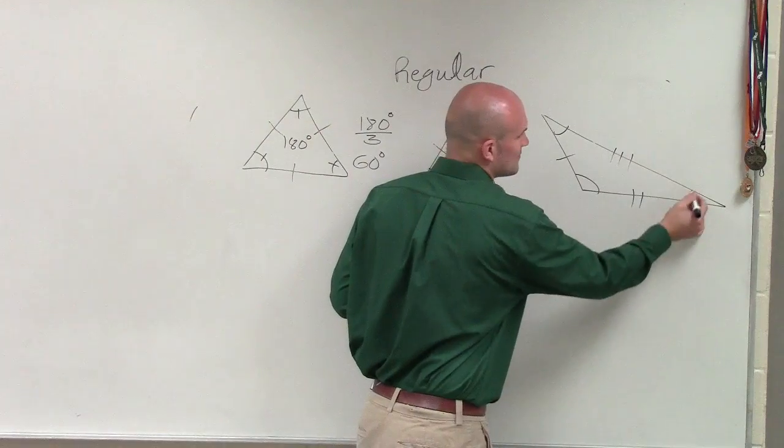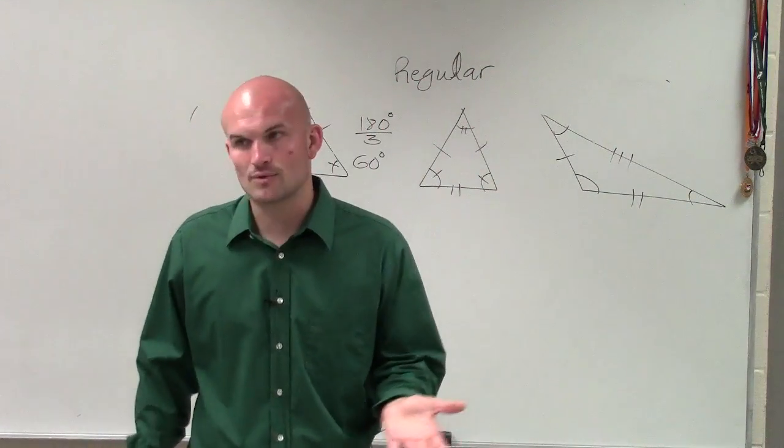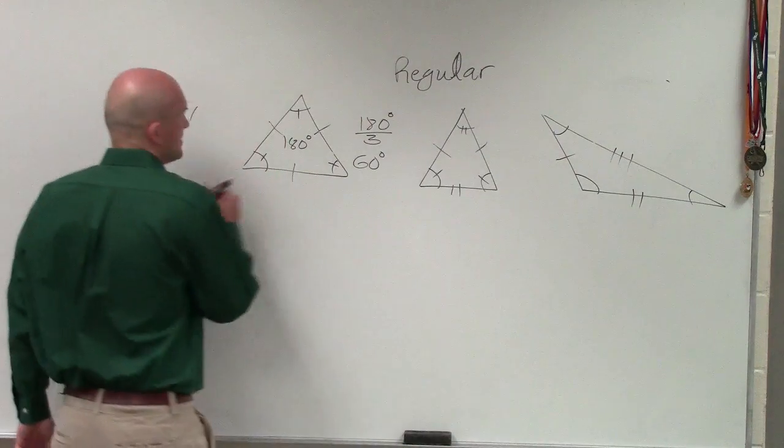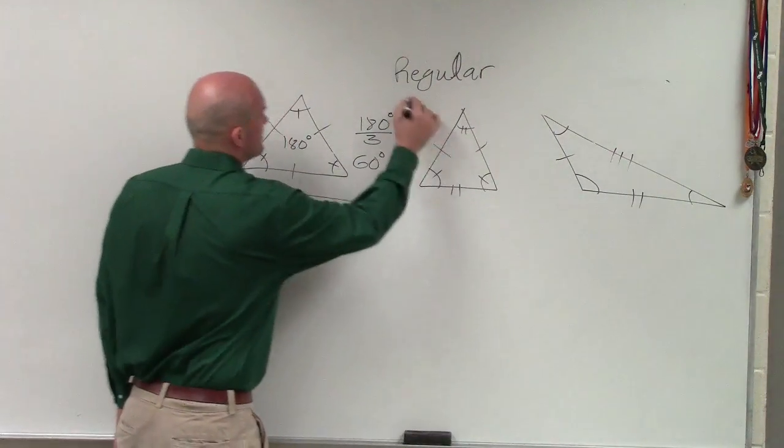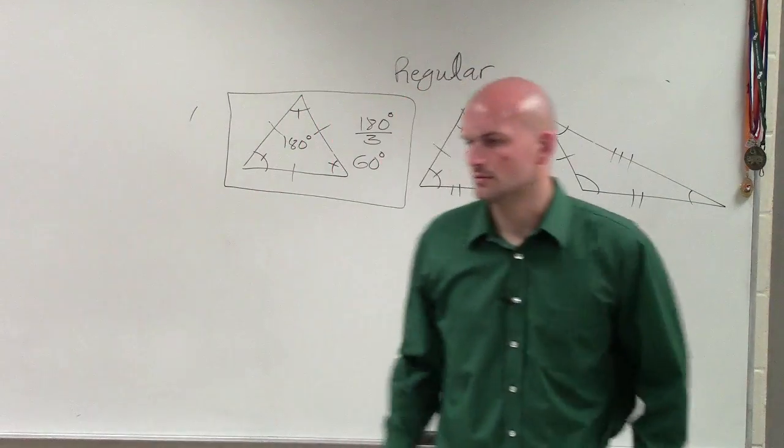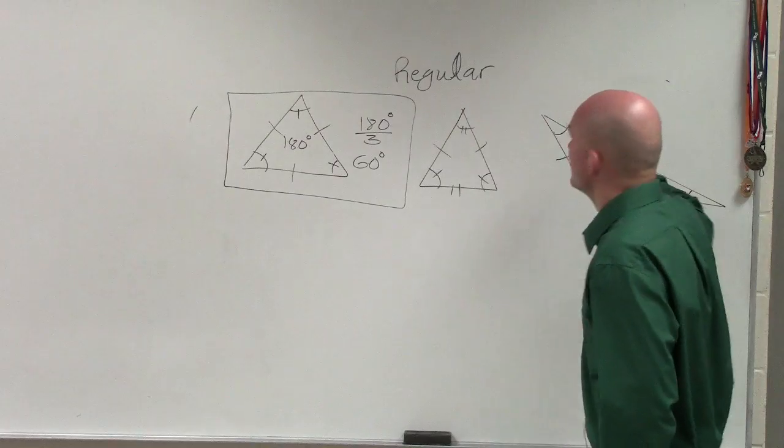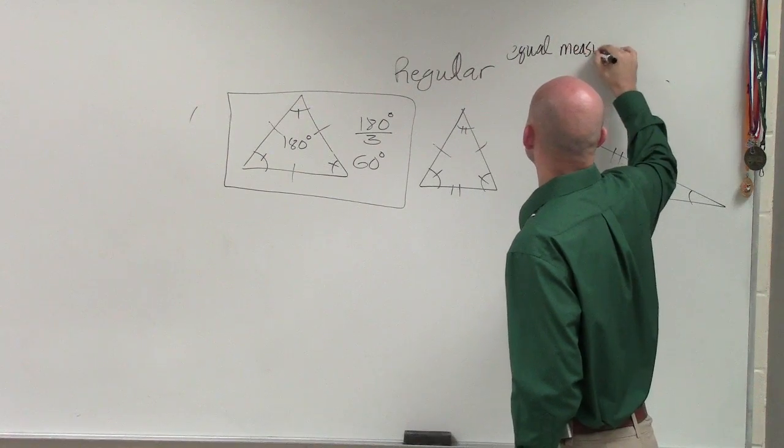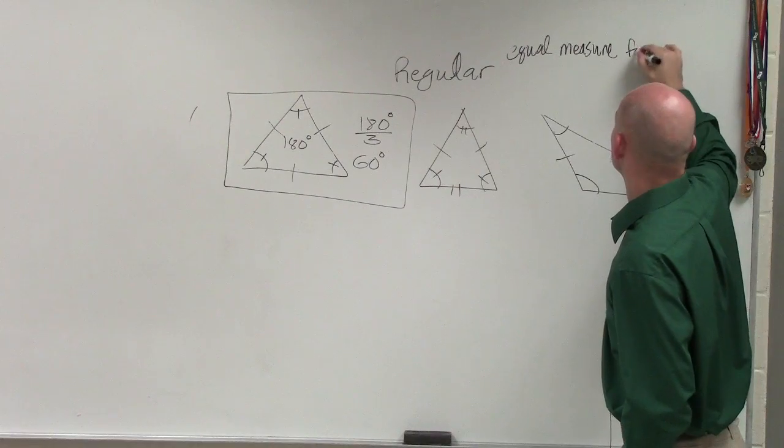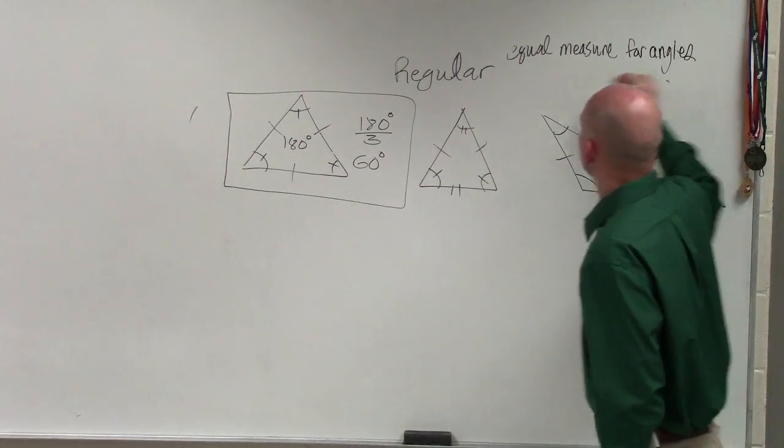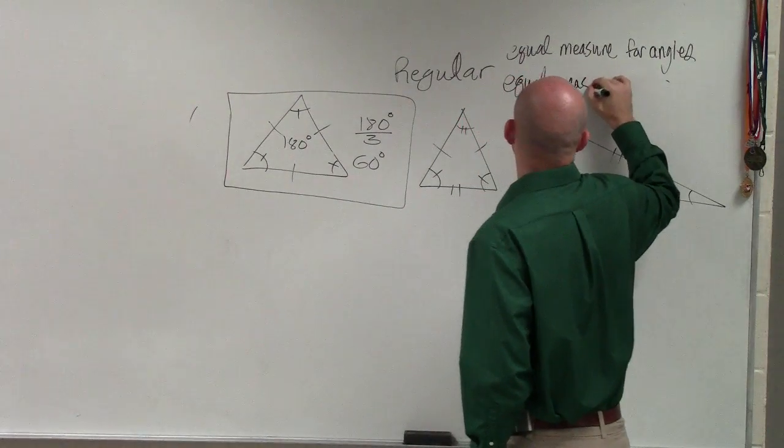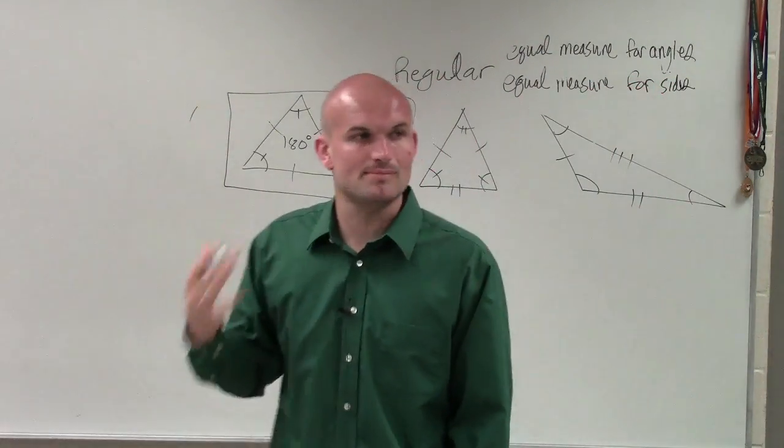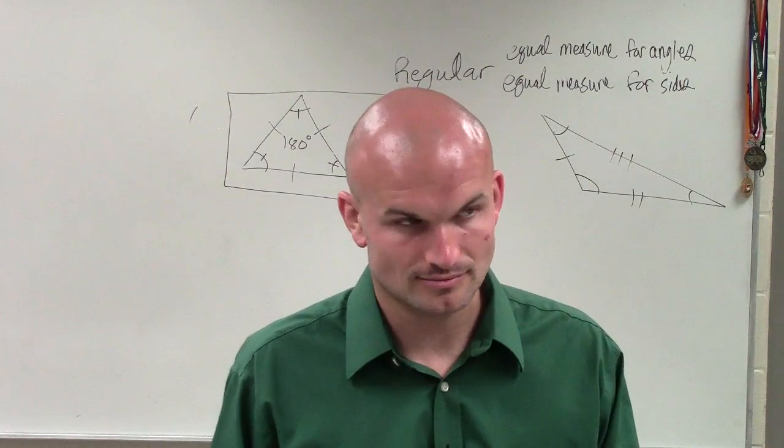But then here you can obviously see we have an obtuse and an acute, so that's not going to work at all. You can't just divide 180 by three. You're not going to get an obtuse angle. So what we call a regular polygon is when you have equal measure for the angles and you have equal measure for the sides. What that means is all the side lengths are equal in measure, all of the angles are equal in measure.